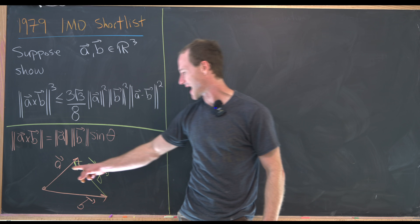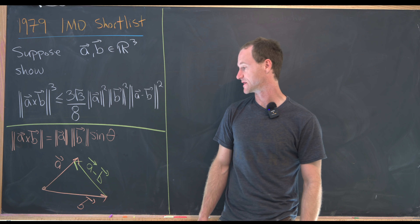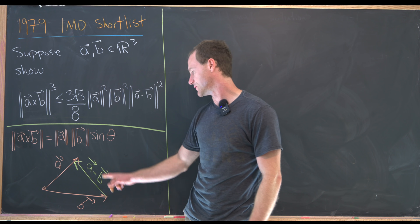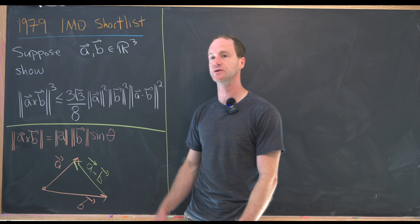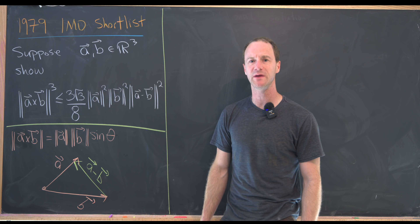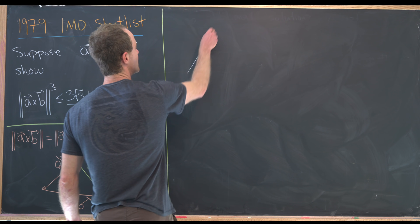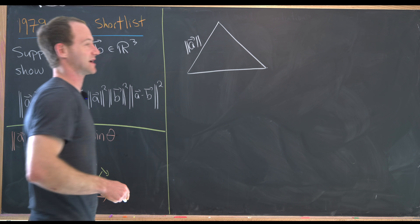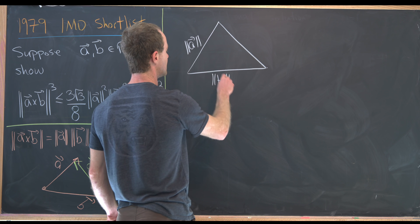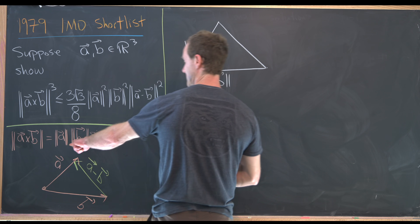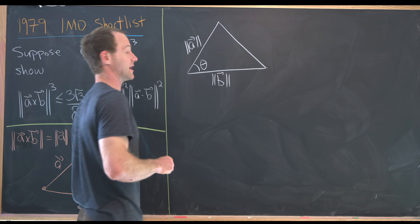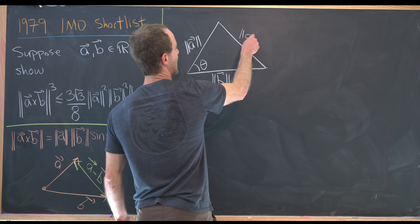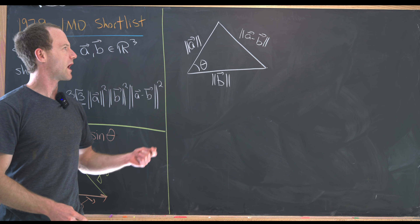Furthermore, if we take the magnitudes of these vectors, we know the side lengths of this triangle. The side length here will be the magnitude of A, the side length here will be the magnitude of B, and this side length will be the magnitude of A minus B. So now we're interested in looking at a triangle, and we know that this angle is theta — the angle between vector A and vector B.